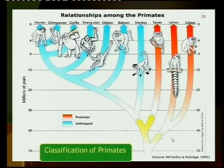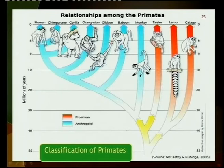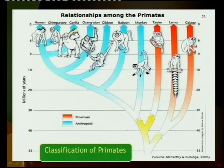When did human evolution occur? You can see that the split between humans and their closest relatives, the chimpanzees, happened more than eight million years ago. We have a common ancestor — we did not develop from chimpanzees or any other ape. We share a common ancestor.